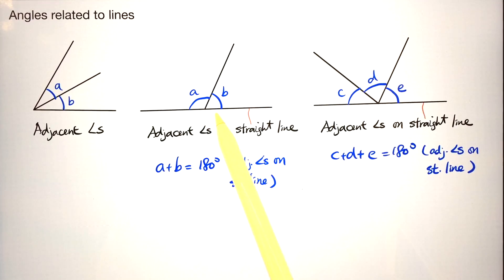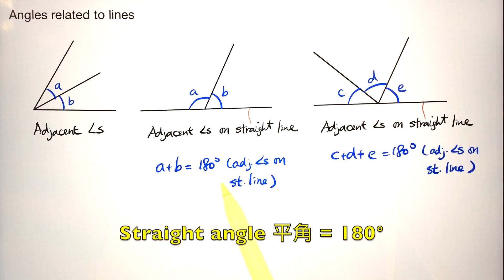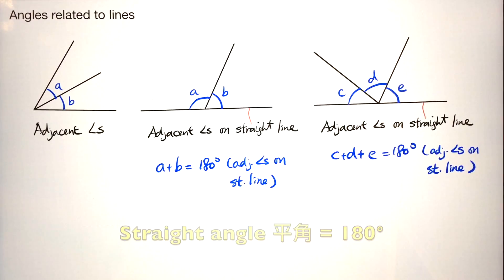And here we have another two adjacent angles, but they are lined on the same straight line. So we call them adjacent angles on straight line. And since the sum of A and B is a straight angle, therefore the sum should be 180 degrees.